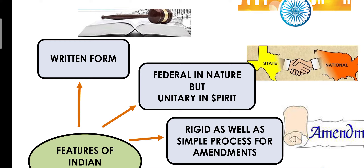Second, India's constitution is federal in nature and unitary in spirit. Every state has its own government and certain powers to run their own state — Maharashtra, Gujarat, Tamil Nadu, Goa — every state has its own powers. But ultimately, the central government is the ruling authority. If state provisions are inconsistent, the central government's laws will prevail. So the constitution is federal — powers are divided — but ultimately, powers converge into the central government.